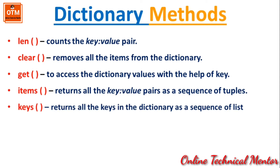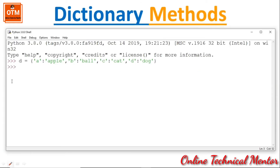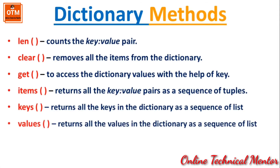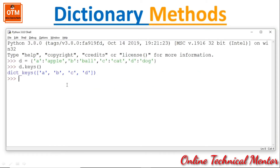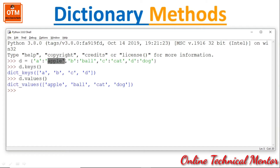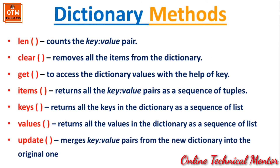Next, keys() returns all the keys in the dictionary as a sequence. If I write D.keys(), it returns a list containing all the keys: A, B, C, and D. Similarly, values() returns all the values in the dictionary as a sequence. D.values() extracts all the values — apple, ball, cat, and dog — and converts them into a list.